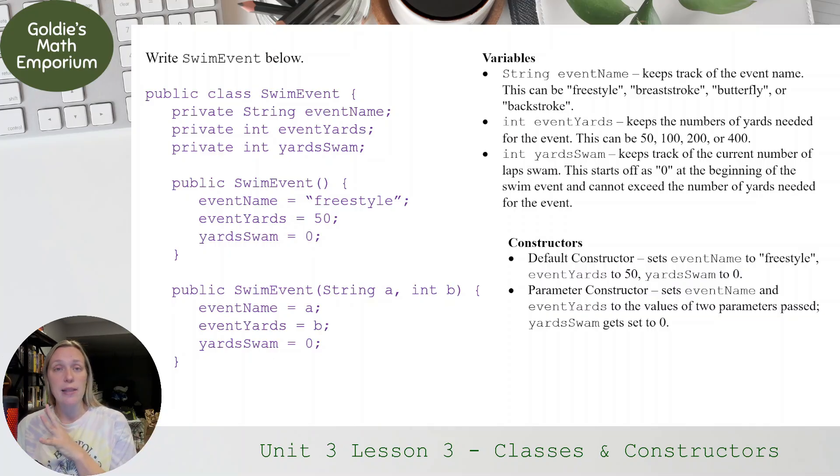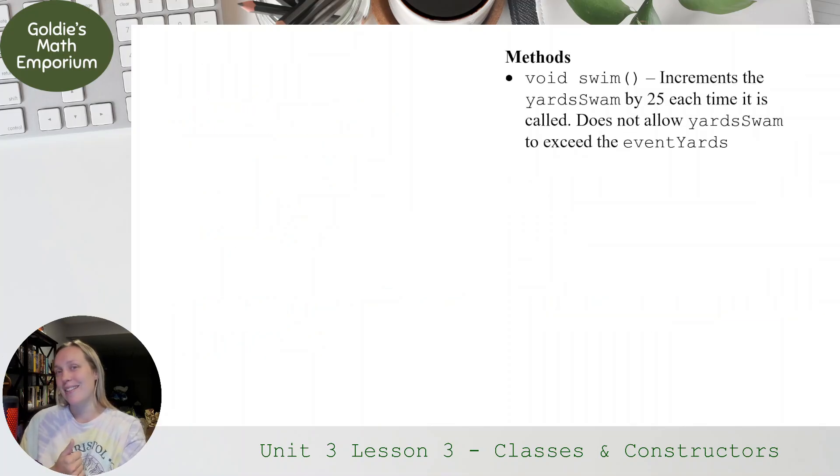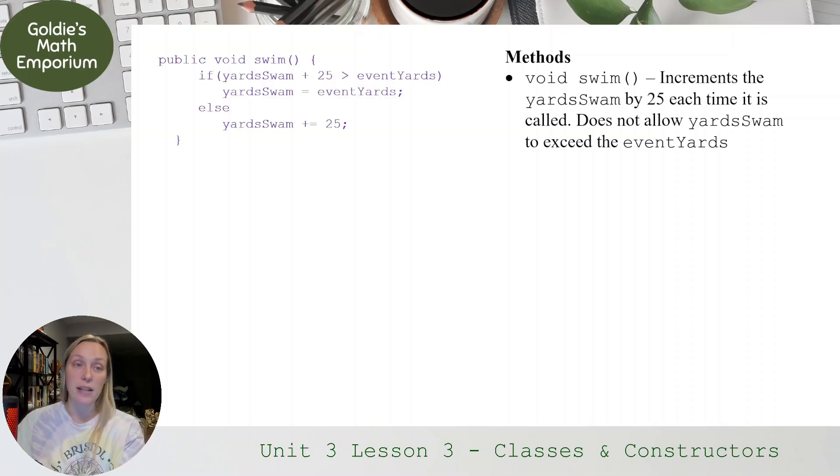So when you read the situation on the AP exam, you're going to want to be able to pick out, what data do I need to represent? And how am I going to first construct these items? Now for the methods. So methods are going to do something interesting. Now my first method, swim, increments the yardsSwim by 25 each time it's called, but it does not allow it to exceed eventYards. So notice this is a void method. This is going to modify my yardsSwim by 25, but it can't exceed eventYards.